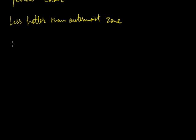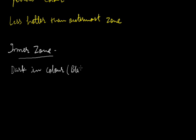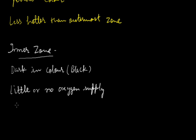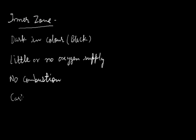The third zone of candle flame is the inner zone. It is dark in color — that is black. In this zone, little or no oxygen supply is there. Because of very less amount of oxygen, there is no combustion taking place. Here carbon monoxide is produced due to very little oxygen present.